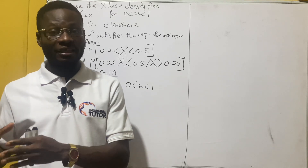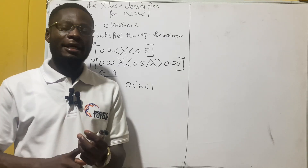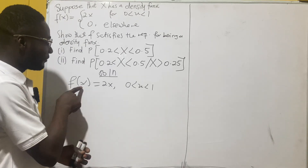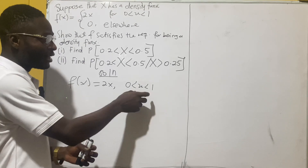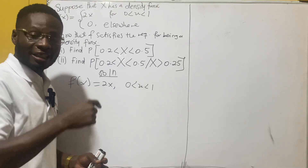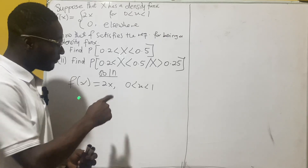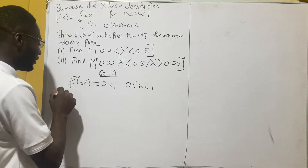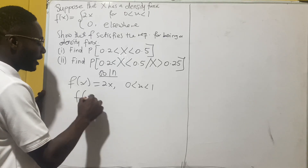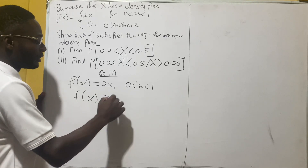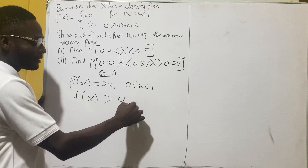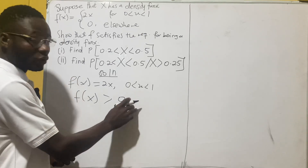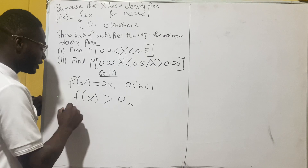The first condition is it must be non-negative. You can see clearly that f(x) = 2x, looking at the range, is a non-negative function. So the first condition is satisfied — f(x) should be greater than zero — and that holds.